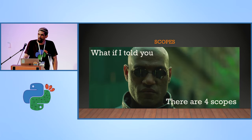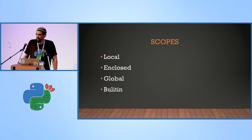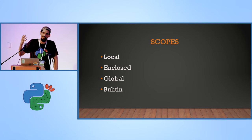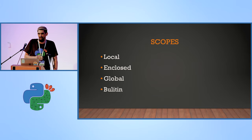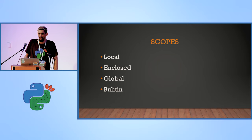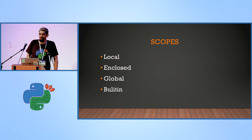We have four scopes in Python: the local scope, the enclosed scope, the global scope, and the built-in scope. The local scope means each function has its own local variables. The enclosed scope is a function that rests inside another function, and can view the variables defined in the functions above it. The global scope is just the module scope — a dictionary that's on the module, and you have access from within the module itself, and you can import from it. And the built-in scope is like an invisible scope where things are just there.